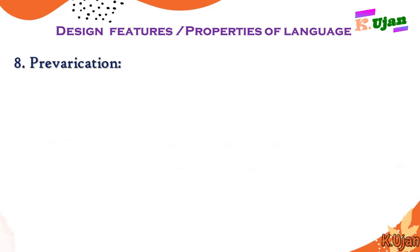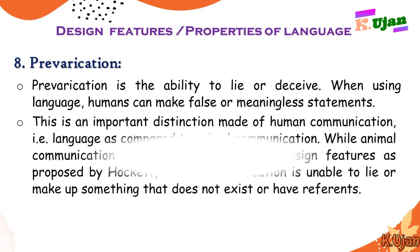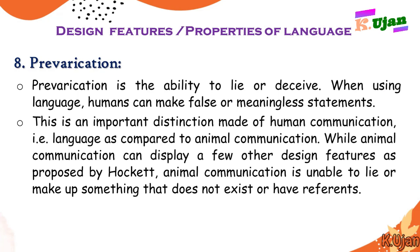Number eight is prevarication — the ability to lie or deceive when using language. Humans can make false or meaningless statements. This is an important distinction of human communication compared to animal communication. While animal communication can display a few other design features as proposed by Hockett, animal communication is unable to lie or refer to something that does not exist. Animals cannot make false or wrong communications, but human beings have this ability.